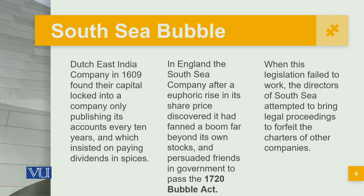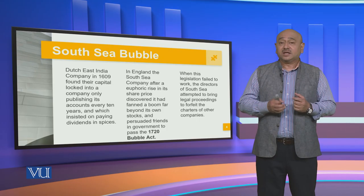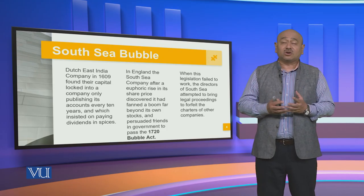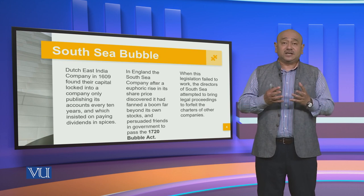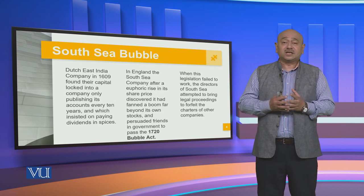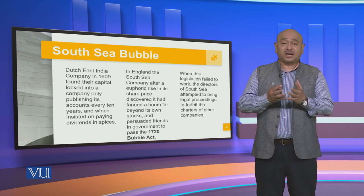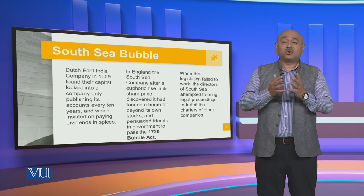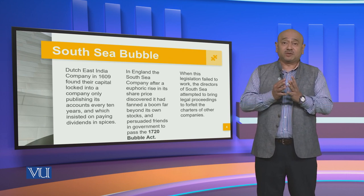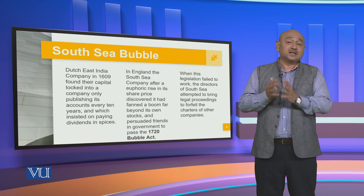The Dutch East India Company in 1609 found their capital locked into a company, only publishing its accounts every 10 years, and they insisted on paying their dividends in spices. That itself created a lot of problems. Therefore, the various governments and monarchies of that time decided that they were going to dilute the ownership of the Dutch East India Company.